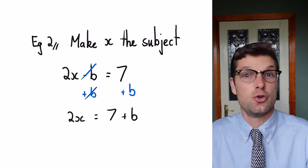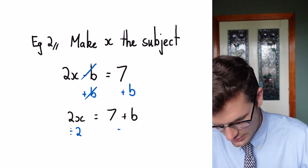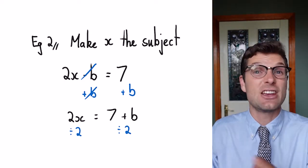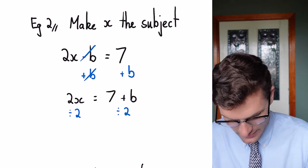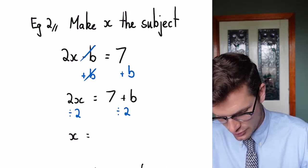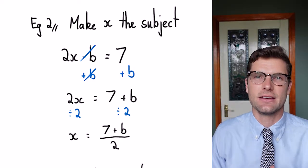Then because it's 2 times x, I've got to divide this side by 2 and divide this side by 2, making sure I divide everything by 2 on that side. So my final answer here is x is equal to 7 plus b, all divided by 2. Final answer.